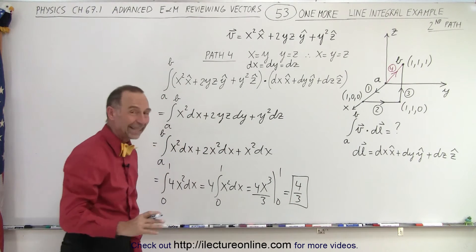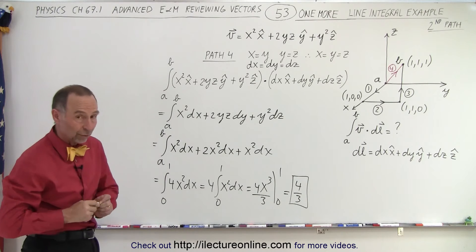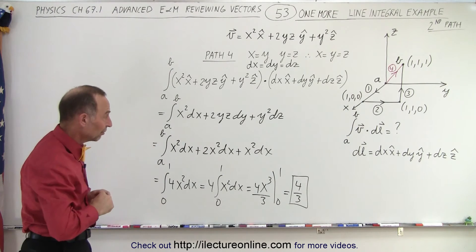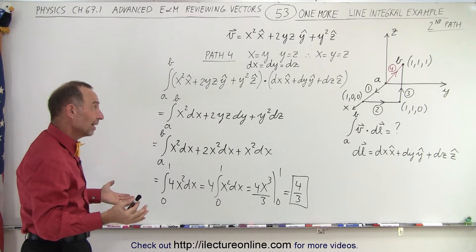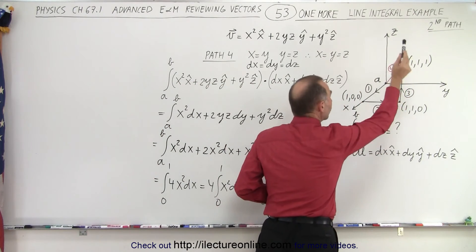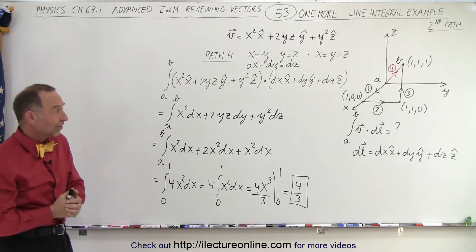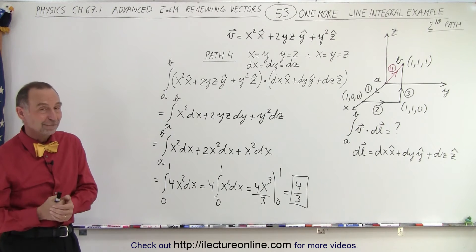And surprisingly enough, we get the exact same result as if we had traveled along path 1, 2, and 3, which we showed you on the previous video. So in this case, it didn't make any difference whether or not we took path 1, 2, 3, or straight across from A to B at the angle. And so we get the same result either way, and that is how it's done.